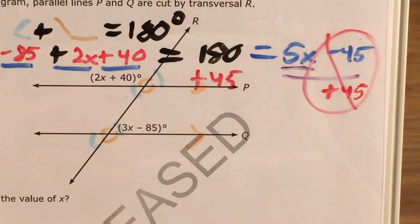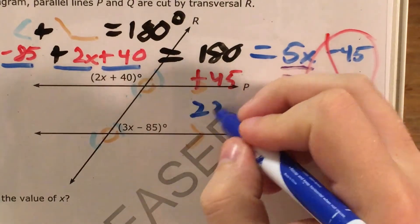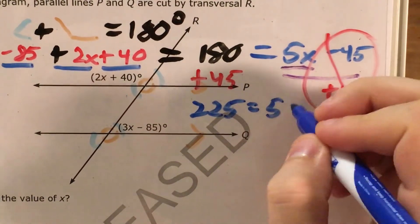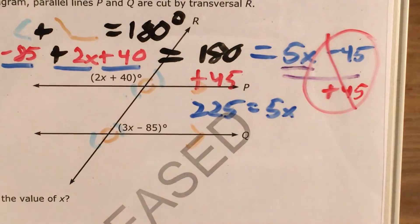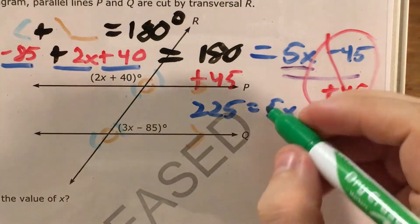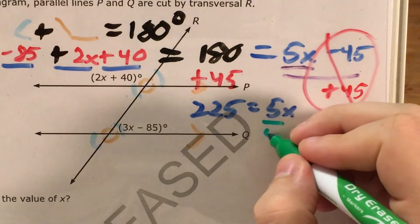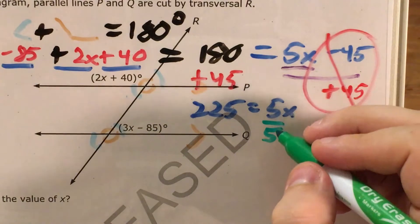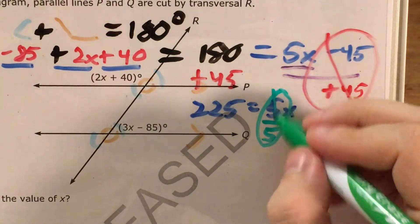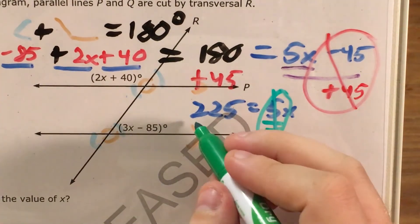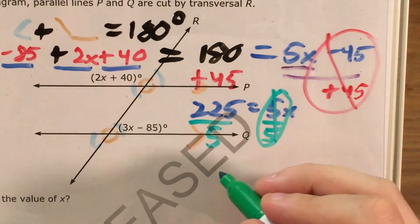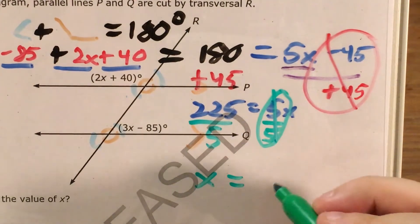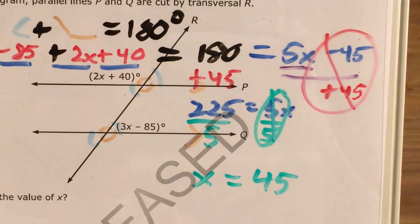I come over here and do 180 plus 45, which gives me 225, which equals 5 times some number. The only thing left to do is recognize that 5x is the same as 5 times x, and divide by 5 because multiplying and dividing are opposites. 5 divided by 5 cancels, and 225 divided by 5 gives me x equals 45.